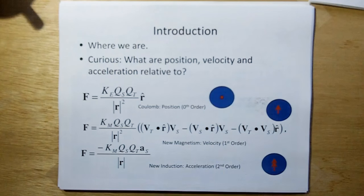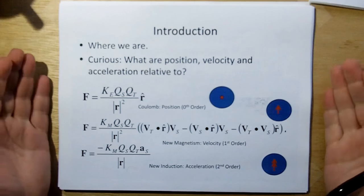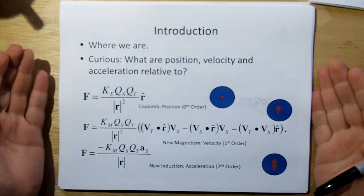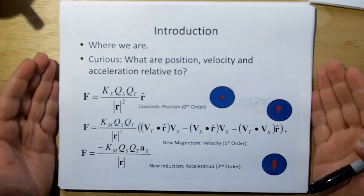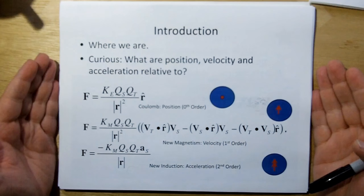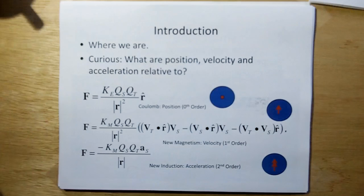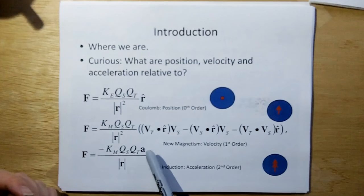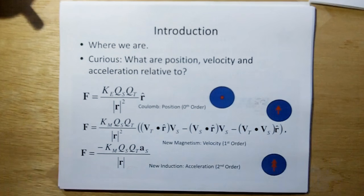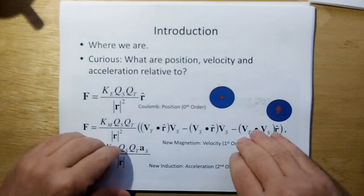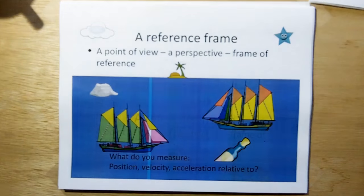So where were we from the previous videos? We came up with three models — second order equations of force-charge models that have been called new electromagnetism. But the curious thing is: what do you measure these accelerations or velocities relative to? How does that matter? Let's consider this.